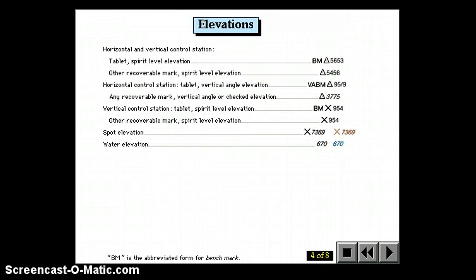Elevations are just given with a number and sometimes a symbol, a triangle with a dot in the middle or an X, if it's some kind of a benchmark, a place where they actually went out and measured in the field exactly how high that specific point was. You'll see those on topographic maps.